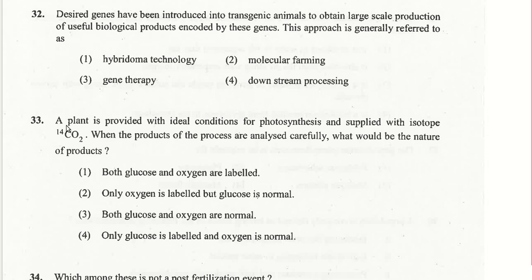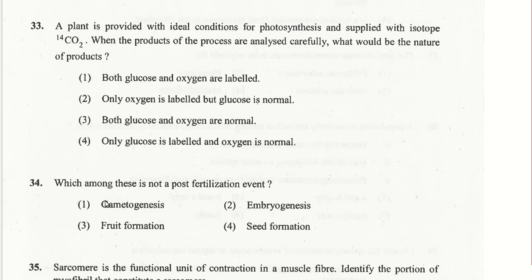A plant provided with ideal conditions for photosynthesis is supplied with isotope 14CO2. When the products are analyzed, only glucose is labeled and oxygen is normal. The fourth option is the answer for question 33.